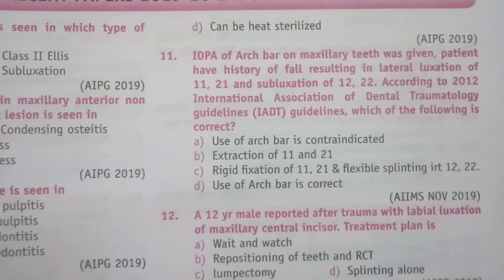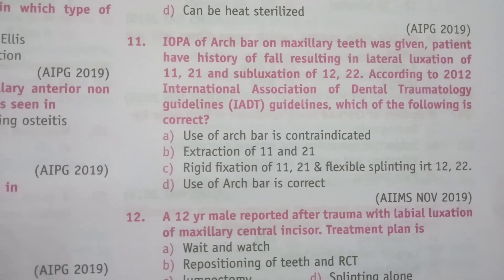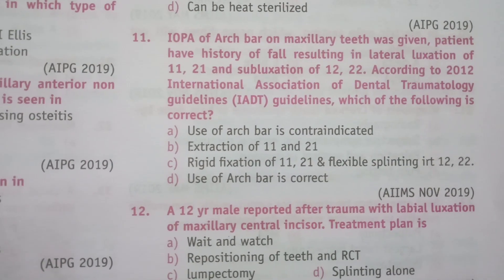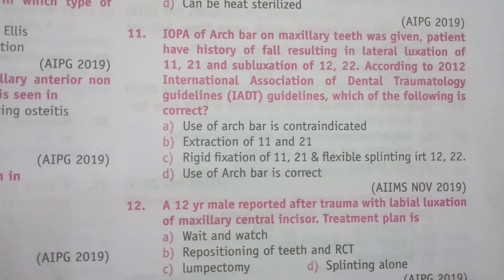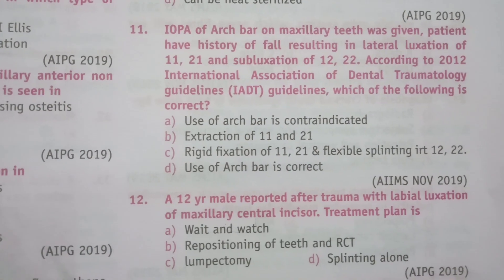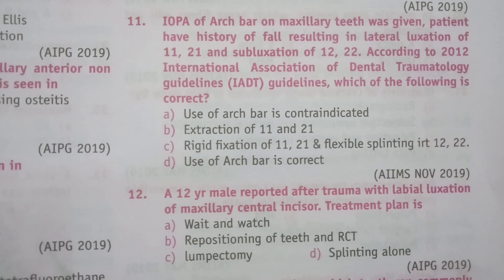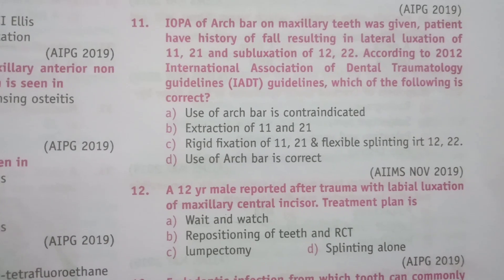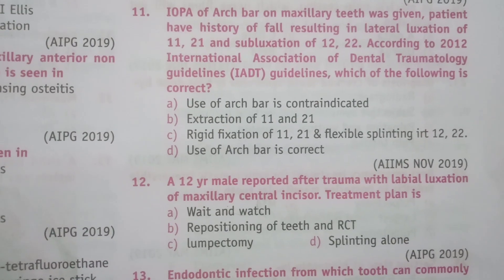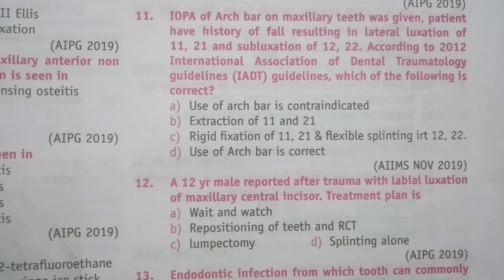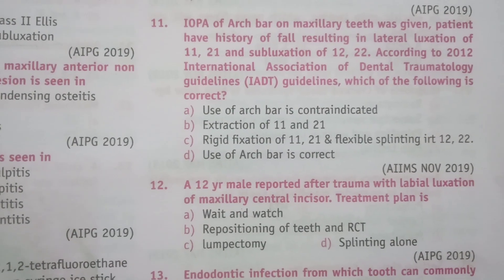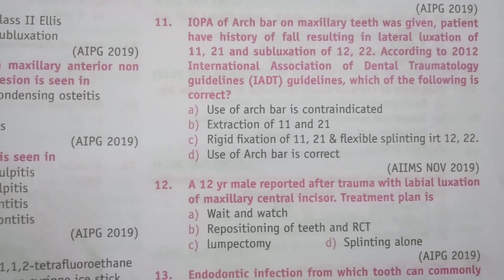Next question: an IOPA with arch bar on maxillary teeth was given. Patient has a history of fall resulting in lateral luxation of 11 and 21, and subluxation of 12 and 22. According to the 2012 International Association of Dental Traumatology guidelines, which is correct? Options: use of arch bar is contraindicated; extraction of 11 and 21; rigid fixation of 11 and 21; flexible splinting for 12 and 22. The answer is A — use of arch bar is contraindicated because arch bar provides rigid fixation, but flexible splinting is needed here.